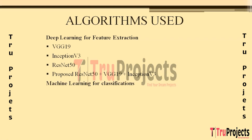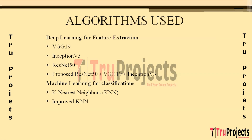The machine learning algorithms built for classification include K-Nearest Neighbors (KNN), which classifies data points based on the majority class of their nearest neighbors. In this project, KNN leverages the proximity of handwriting features to determine if patterns indicative of Parkinson's disease are present, making it a simple and intuitive approach.